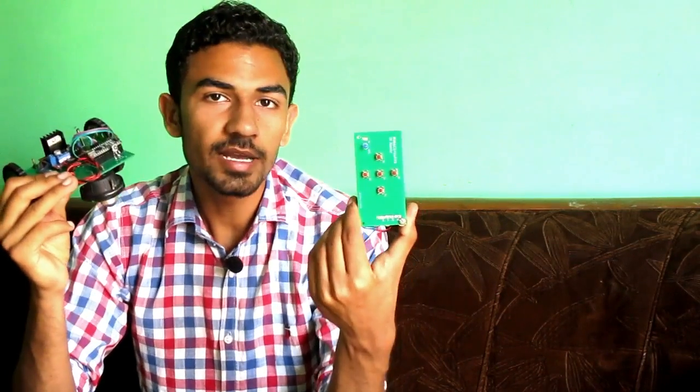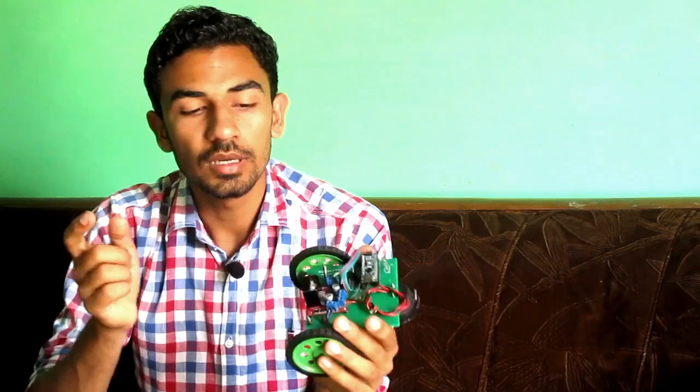Hey there, welcome to RoboCircuits. In this part we are going to complete our IR car which we made in part 1 and the IR remote which we made in part 2. So let's take a quick tour. Here we have IR receiver and Arduino Nano, L298N motor driver board, and two DC motors.